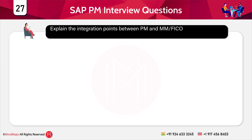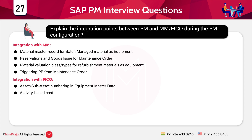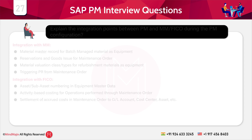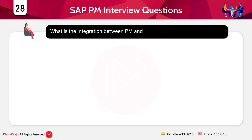Explain the integration points between PM, MM, and FICO during PM configuration. For SAP MM and SAP PM integration: material master record for batch-managed materials as equipment, reservations and goods issue for maintenance orders, material valuation class or types for refurbishment materials as equipment, and triggering PR from maintenance orders. For SAP FICO integration: asset or sub-asset numbering in equipment master data, activity-based costing for operations through maintenance orders, and settlement of accurate costs in maintenance orders to GL account, cost center, asset, and so on.